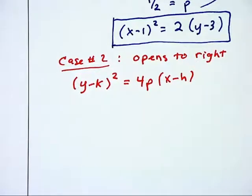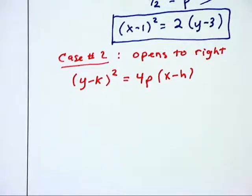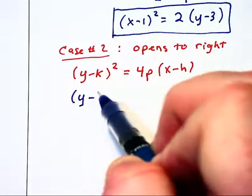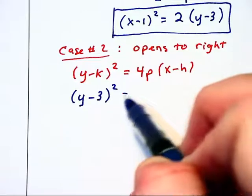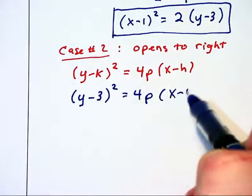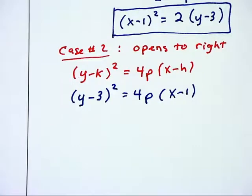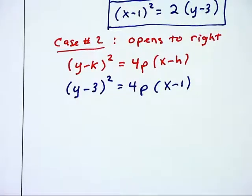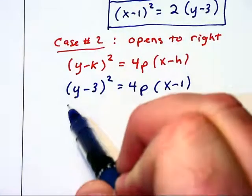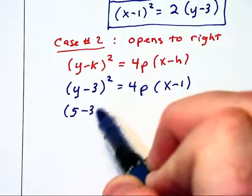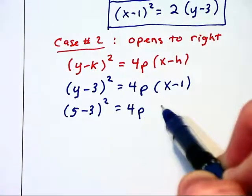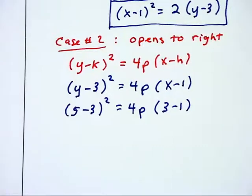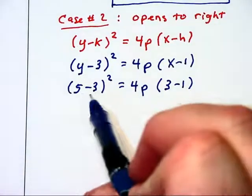And again, we can substitute in the vertex for h and k, and that gives us y minus 3 squared equals 4p times x minus 1. And just as we did in that first case, we can substitute in the point 3 comma 5, and that will give us 5 minus 3 squared equals 4p times 3 minus 1.